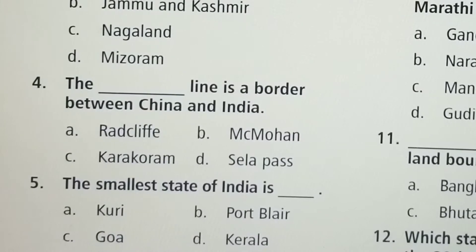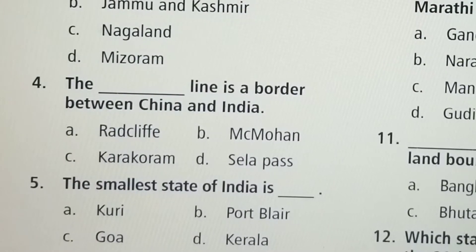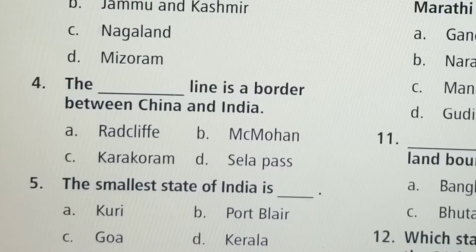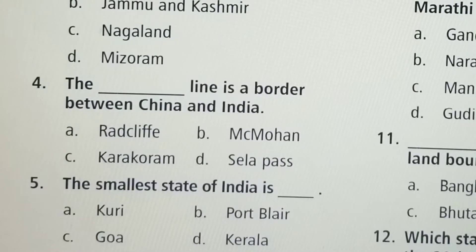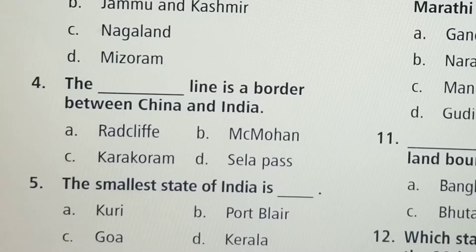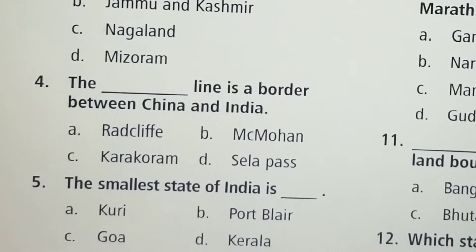Next question: The dashed line is the border between China and India. Option A: Radcliffe, Option B: McMahon, Option C: Karakoram, Option D: Salapas. Option B, McMahon, is the correct answer.